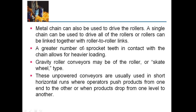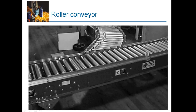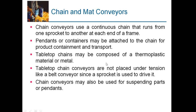The roller conveyor can be straight, or it can change direction — the product will flow from one direction, reach this roller, and automatically travel in the perpendicular direction.